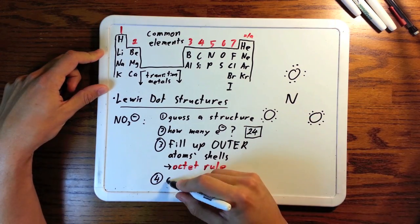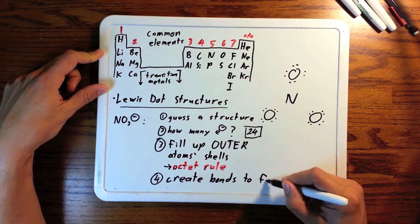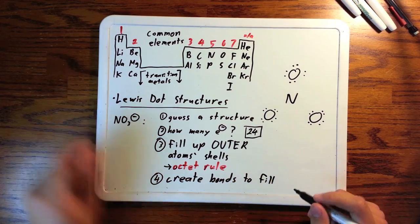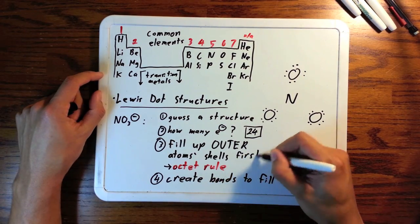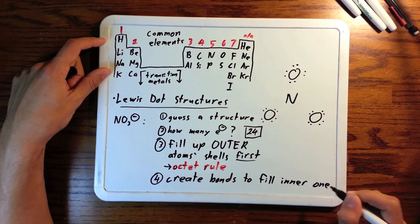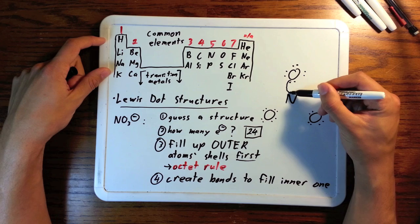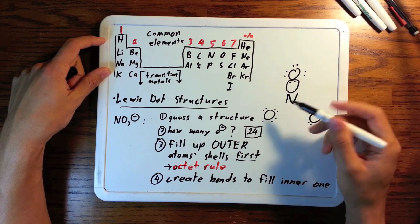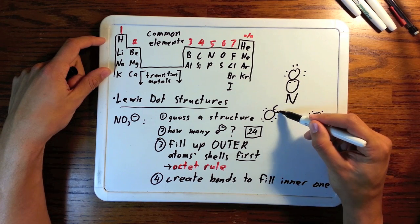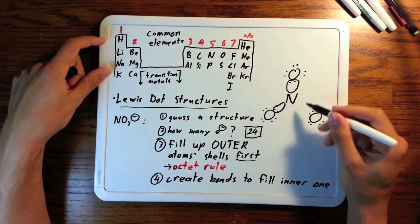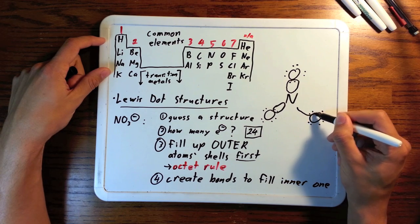The last step, create bonds from the outer atoms to the inner one, to fill its octet. And if you can't fill it, then come as close as you can to filling it. Here's what I mean by create bonds. Take 2 from the outside, just draw something like this. That'll help you visually. Now, these 2 electrons are now shared by the inner and outer atoms, nitrogen and oxygen in this case, in a bond.